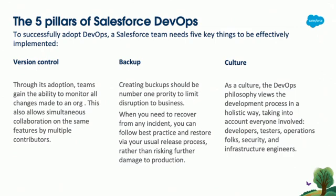The five pillars of the Salesforce DevOps process — I will start with the three I believe are crucial for the basics for the Salesforce admin: version control, backup, and culture. Version control allows us to monitor all of the changes in the system. We are able to check if we made any changes in the flow, in the picklist, or whatsoever. We can easily track how changes happened, who made the changes, and if we need to revert a change that happened in the system, we can easily do that.